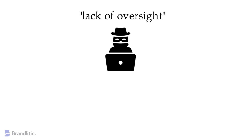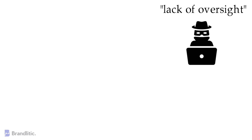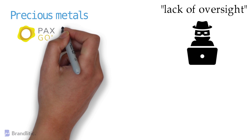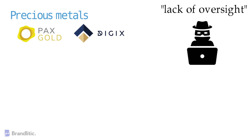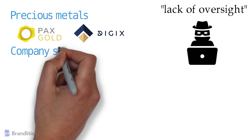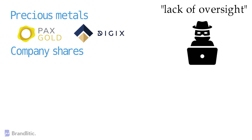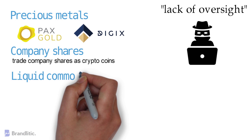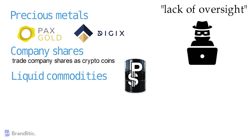Here are some assets that can be tokenized. First, precious metals — for example, Pax Gold and Digix Gold Token are backed by gold. Second, company shares — instead of trading via well-known exchanges, they could be traded as crypto tokens. Next, liquid commodities — for example, the Petrodollar is claimed to be backed by oil and mineral reserves. And finally, real estate — multiple tokens exist around real estate, and several countries are looking into representing real estate as a crypto token.